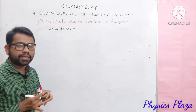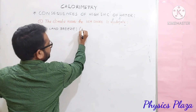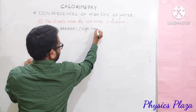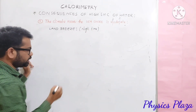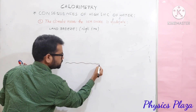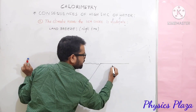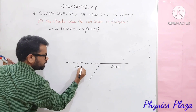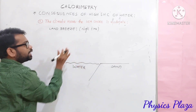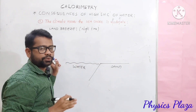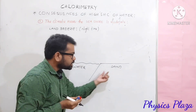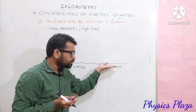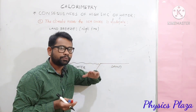Now let us see how land breeze can occur. Land breeze can occur during nighttime. During nighttime, the atmospheric temperature goes to a minimum. Here is a water surface and here is sand. During nighttime, as sand's specific heat capacity is less, the surface temperature of sand will go to a minimum — it will show more falling temperature.